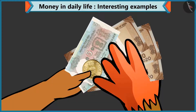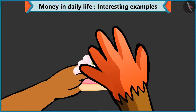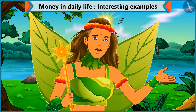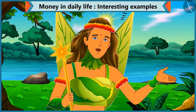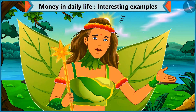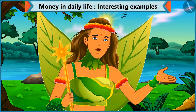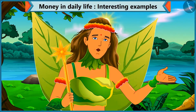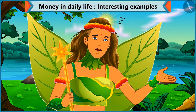Take this, brother, 45 rupees. Here is your pastry. Thank you. So, children, you saw how we made 45 rupees in 2 different ways? You can also think of other ways. Let's see what Chi Chi is doing next.